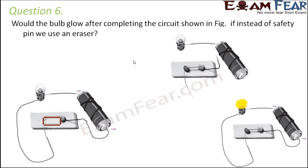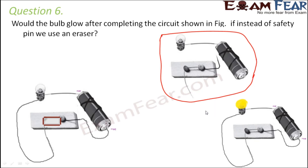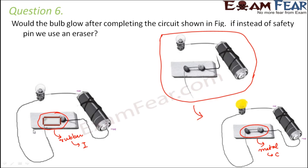Would the bulb glow if instead of a safety pin we use an eraser to complete the circuit? A safety pin is made of metal, which is a good conductor of electricity. But an eraser is made of rubber, which is an insulator — it does not allow current to pass through it. Since current cannot flow through the eraser, the bulb would not glow, because eraser is a poor conductor of electricity.